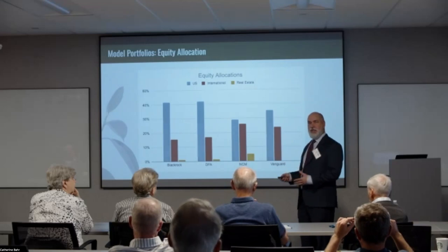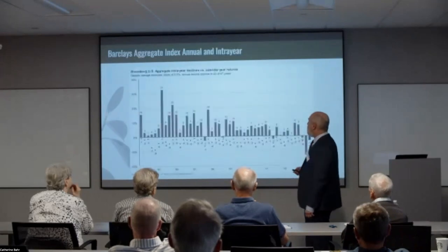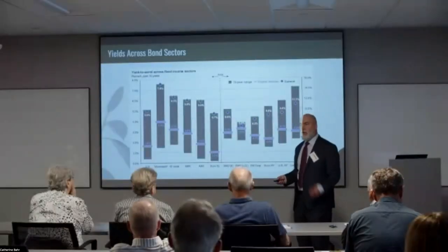This chart shows that yields on all types of bonds — municipals, Treasuries, emerging market bonds, high yield bonds — are all trading right now with yields that are toward the top of the last ten years. Which means the price is lower, which means bonds are a lot better deal here than they were at the bottom.